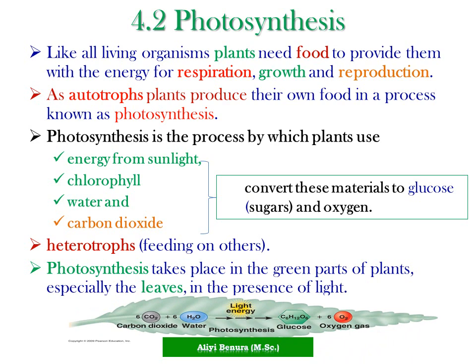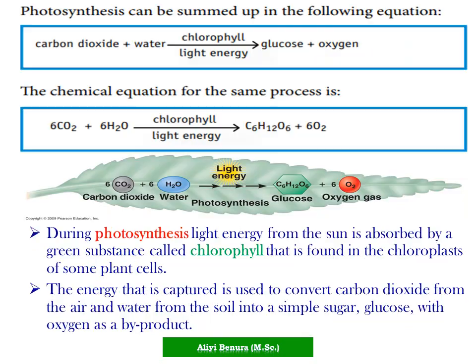We can see from this structure that the reaction of photosynthesis takes place in the leaves. Photosynthesis can be summarized by the following equation: carbon dioxide plus water, in the presence of sunlight and chlorophyll, produces glucose and oxygen.